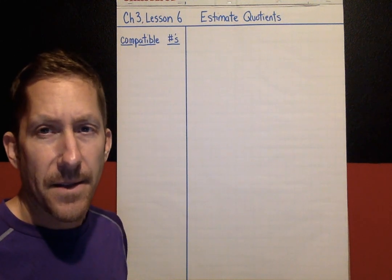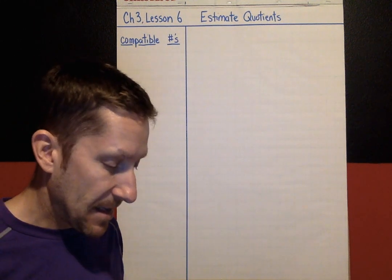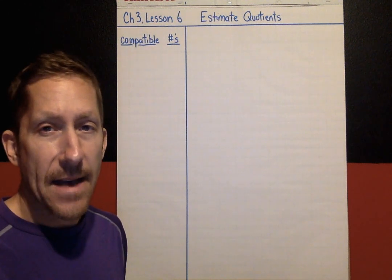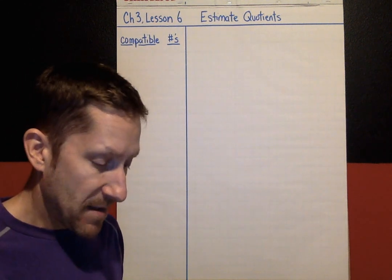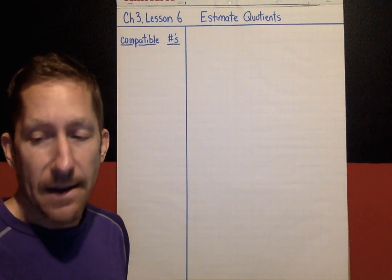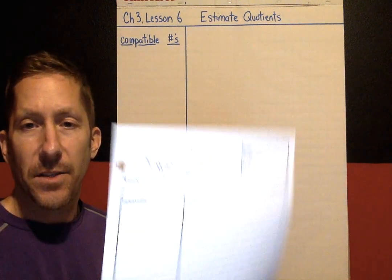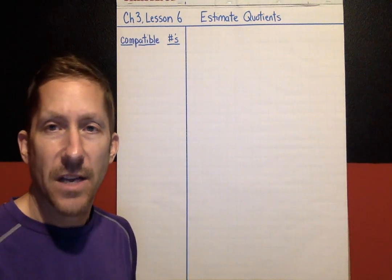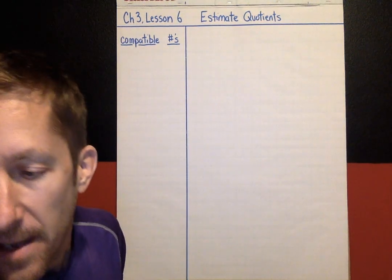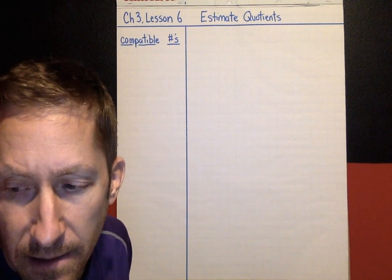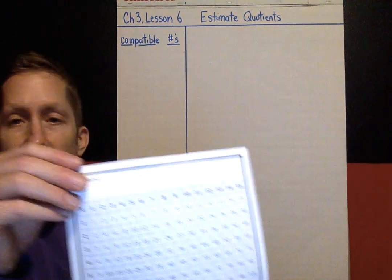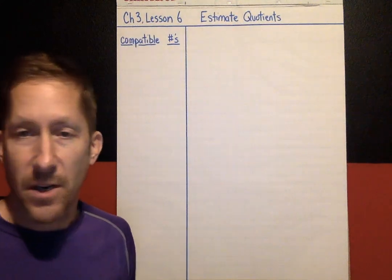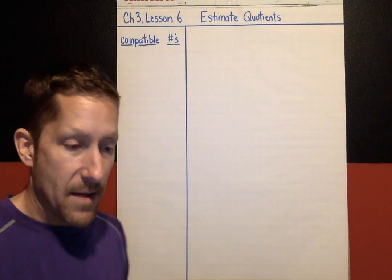Hi MMS, this is chapter 3 lesson 6. Our topic today is estimating quotients. You're going to need a note page or a composition book for taking notes. Something else that might help you today is your multiplication table — this could come in handy for a lot of the work you're going to do today.